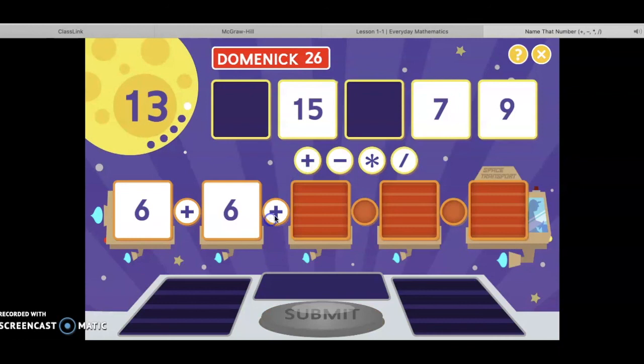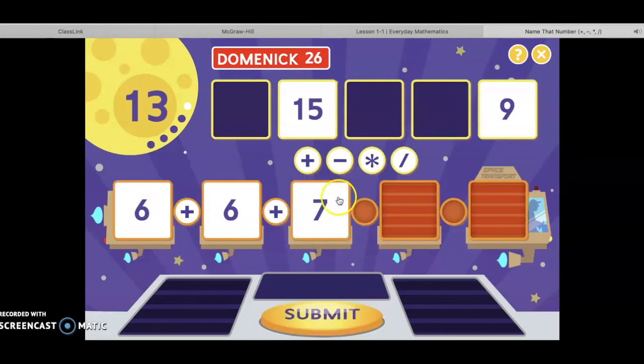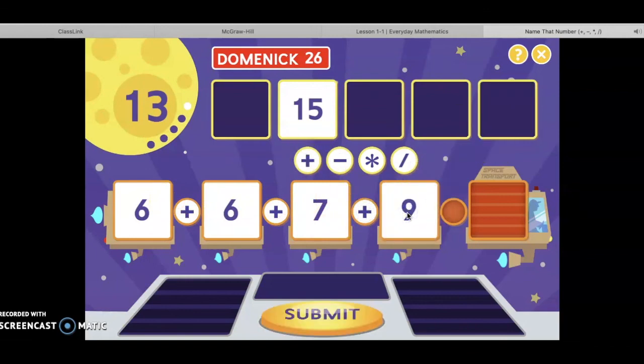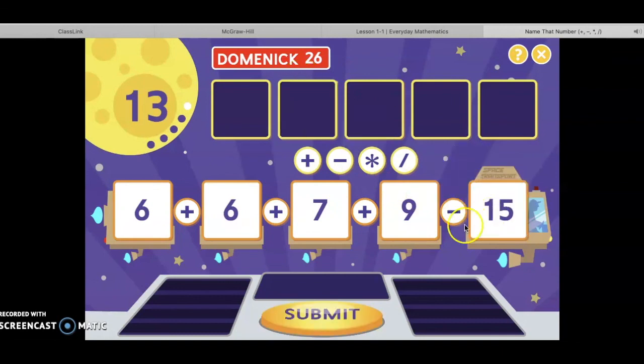Plus seven, that's going to equal nineteen. Plus nine, nineteen plus nine is twenty-eight, minus fifteen should equal thirteen. Let's check.